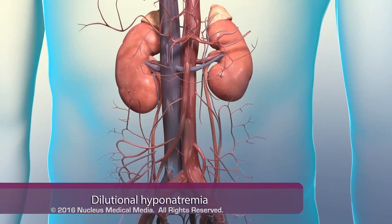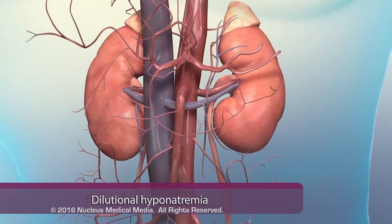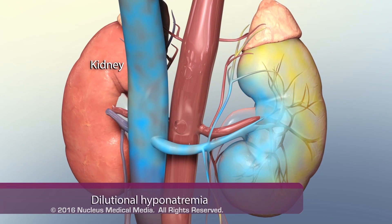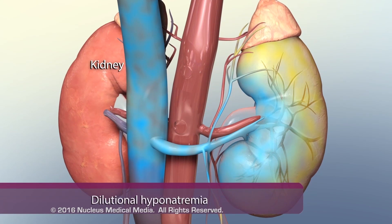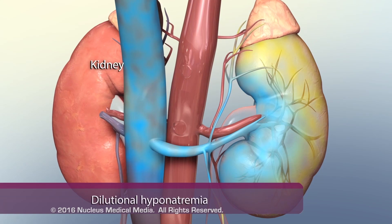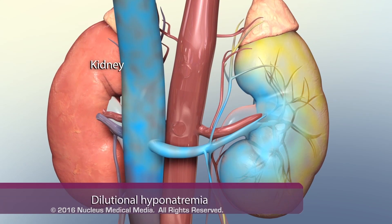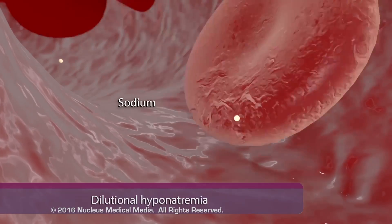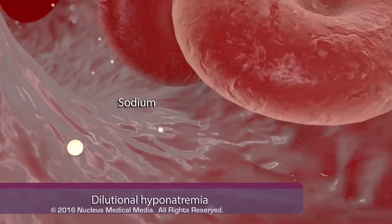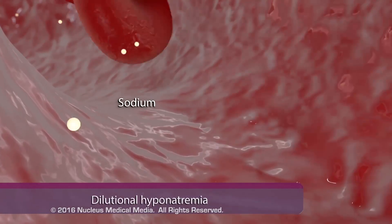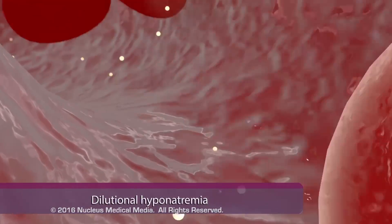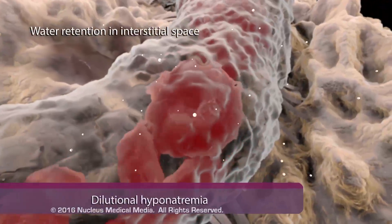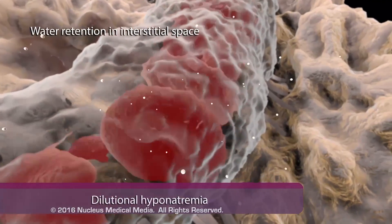Likewise, in chronic kidney disease, the kidneys lose the ability to adequately filter the appropriate amount of fluid and waste products from the blood. This abnormal process dilutes blood sodium levels and leads to water retention in the interstitial spaces.